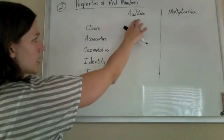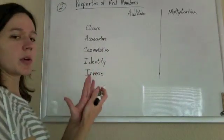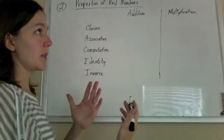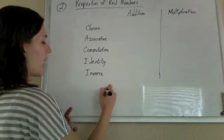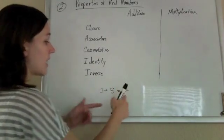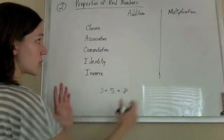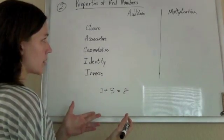We say that a set is closed under addition if you add any two elements in the set, you get an element in the set. So if I add two integers, I get an integer. So the integers are closed under addition.